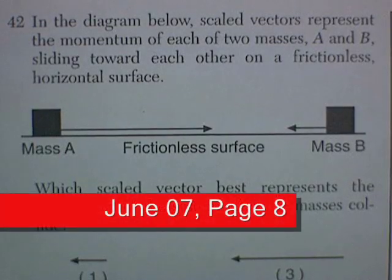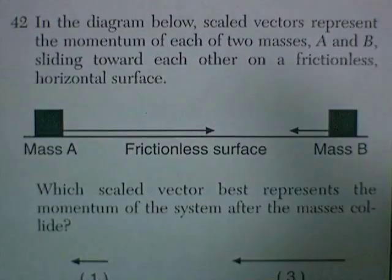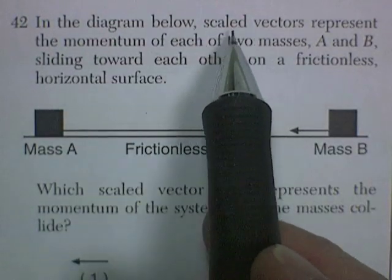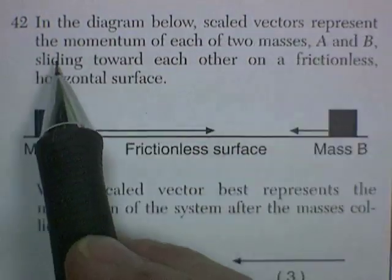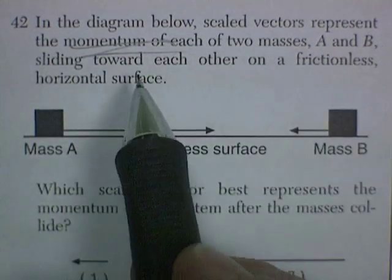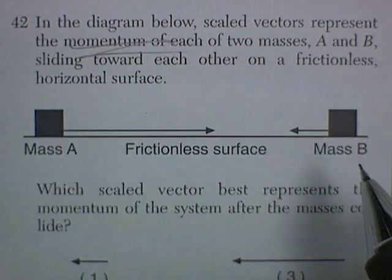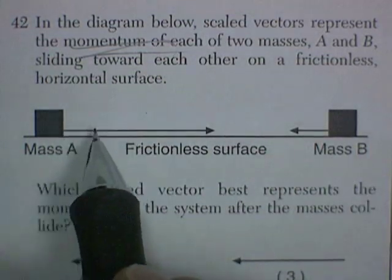We have June of 2007, page 8. Question 42. In the diagram below, scaled vectors represent the momentum of each of the two masses, A and B, sliding towards each other, and they're on a frictionless horizontal surface. So if we look at the diagram...